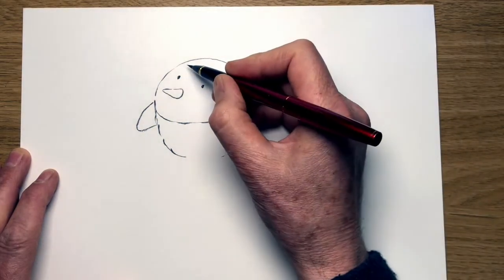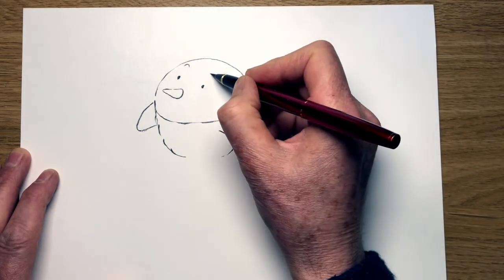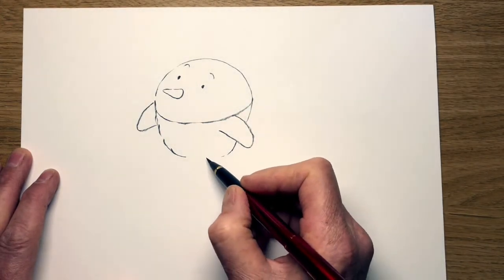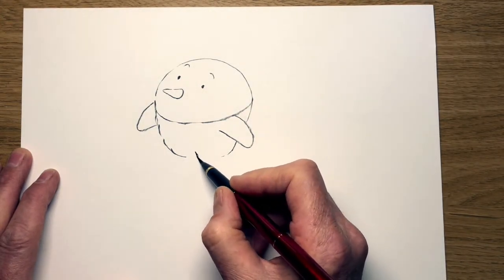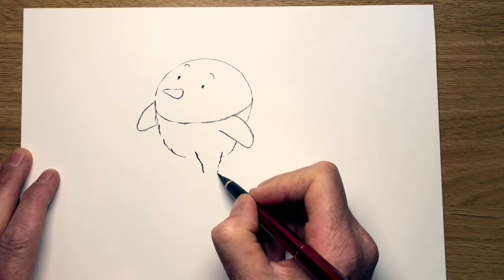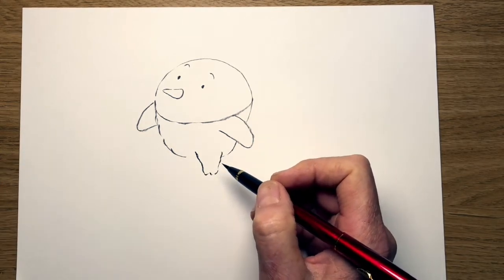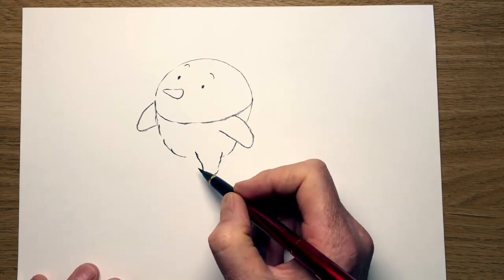There we go. And some eyebrows on them. Now for the legs. I'm doing a leg coming down like this. Again sort of triangular shape. I think I'm going to have it slightly feathery at the bottom.